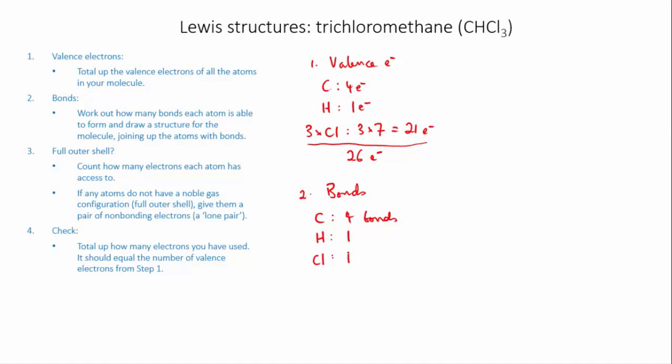Alright, so carbon forms 4 bonds, and I have 4 other atoms which each want to form 1 bond, so the skeleton structure is going to have to look like this. That's the only way that I can give carbon 4 bonds, and each of the others only 1.